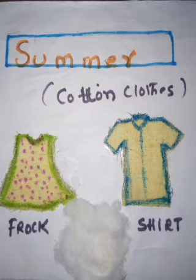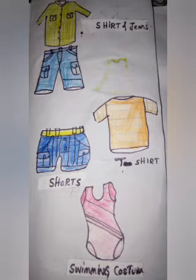Summer clothing examples include frock, shirt, jeans, t-shirt, and shorts. For swimming, we can use a swimming costume.